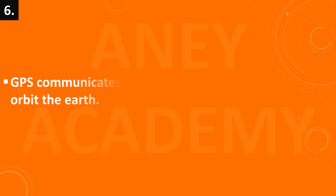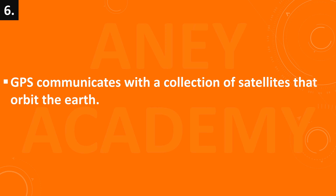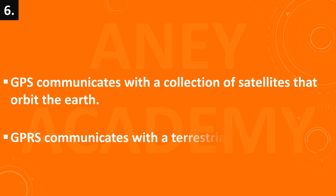GPS communicates with a collection of satellites that orbit the earth. GPS satellites ke saath communicate karti hai jo prithvi ki parikrama karti hai. GPRS communicates with a terrestrial tower. GPRS ek terrestrial tower, yaani zameen par sthit tower ke saath communicate karta hai.